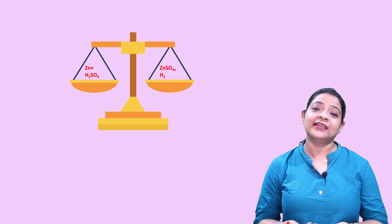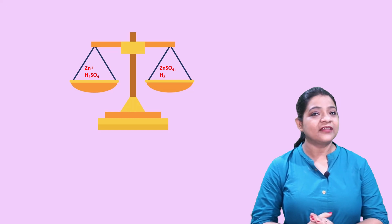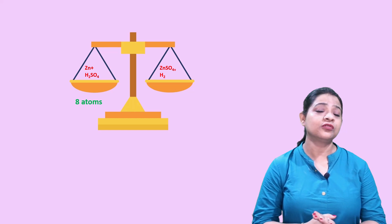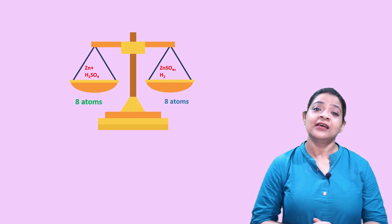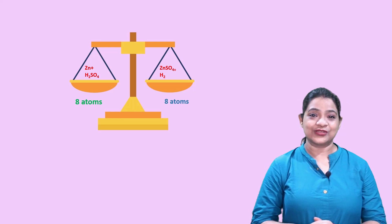So what do we see? The number of atoms in the reactant side and the number of atoms in the product side is exactly the same. So we say that this equation is a balanced chemical equation. If we put the reactants — zinc and sulfuric acid — on the left hand side of the scale and the products on the right hand side, we see that the levels are perfectly balanced. The reactants have eight atoms and the product has eight atoms, so both are equal and the scale is perfectly balanced. Hence the chemical equation is also balanced.